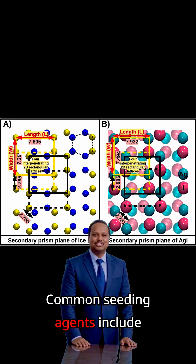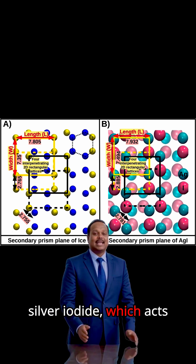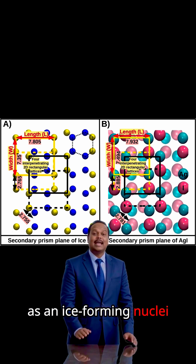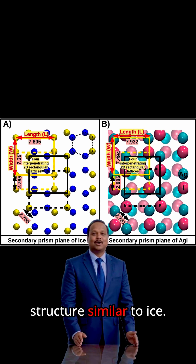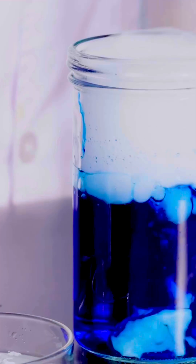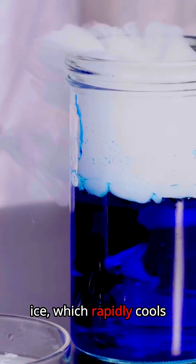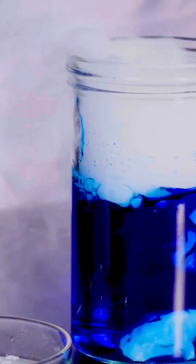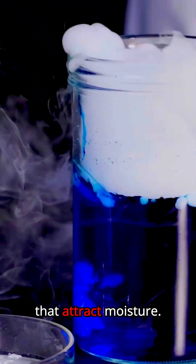Common seeding agents include silver iodide, which acts as an ice-forming nuclei due to its crystalline structure similar to ice. Other agents are dry ice, which rapidly cools the air, and hygroscopic materials like table salt that attract moisture.